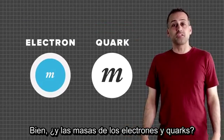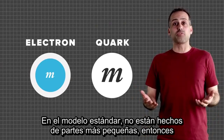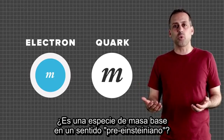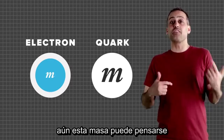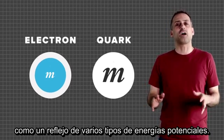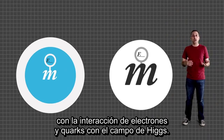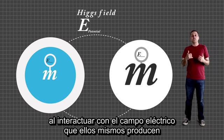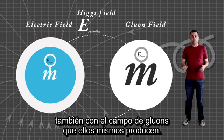What about the masses of electrons and quarks? At least in the standard model of particle physics, they're not made up of smaller parts, so where does their mass come from? Crudely speaking, you can think even of this mass as a reflection of various kinds of potential energies — for instance, the potential energy associated with the interactions of electrons and quarks with the Higgs field, and also potential energy from interacting with the electric fields and, in the case of quarks, the gluon fields that they themselves produce.